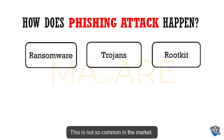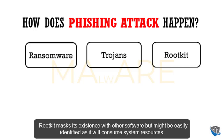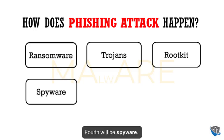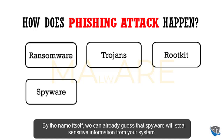Third is the rootkit. This is not so common in the market. Rootkits mask their existence within other software, but might be identified because they consume system resources. When your system resources are consumed, you may suspect something is wrong and send it for repair.